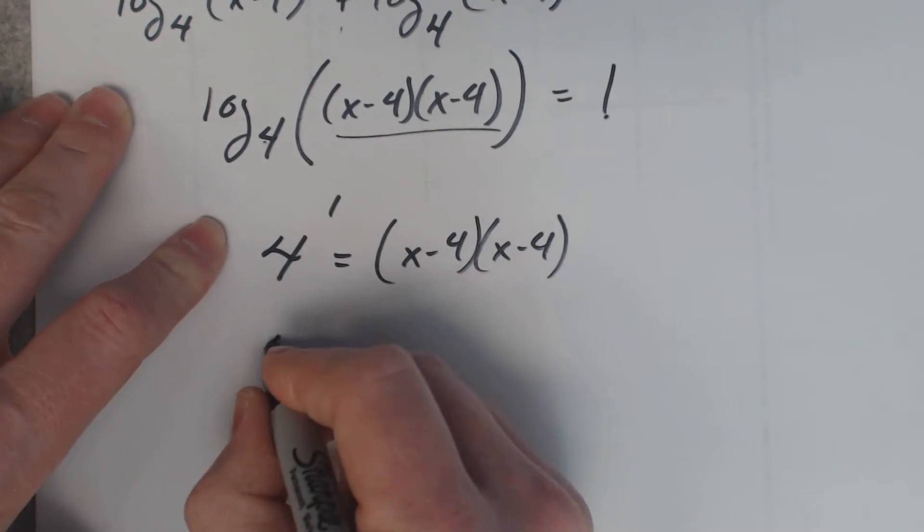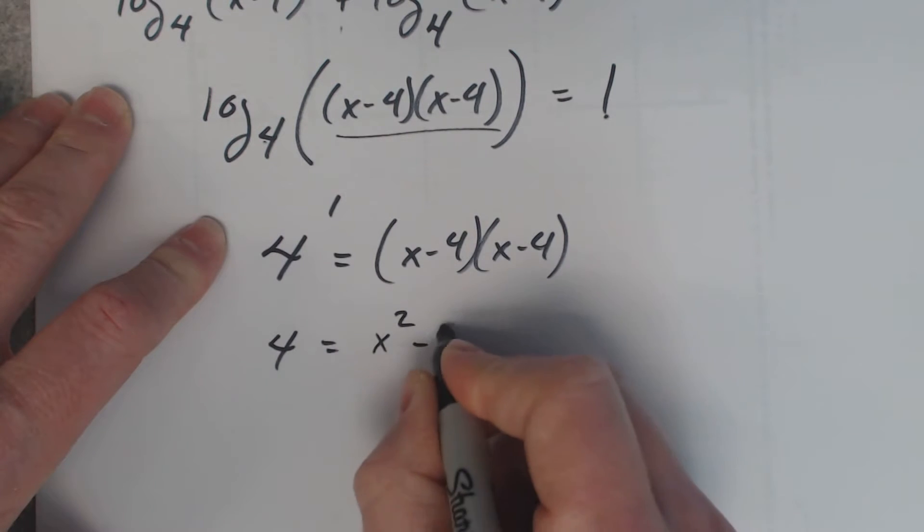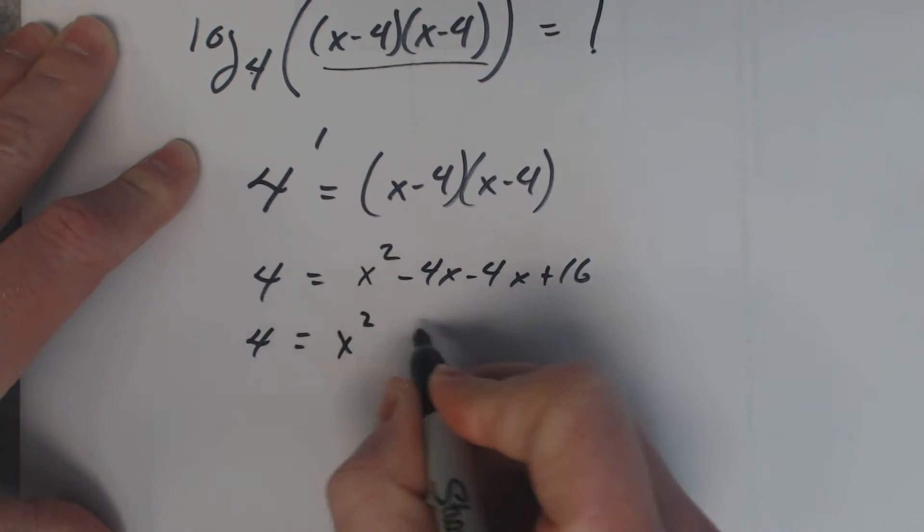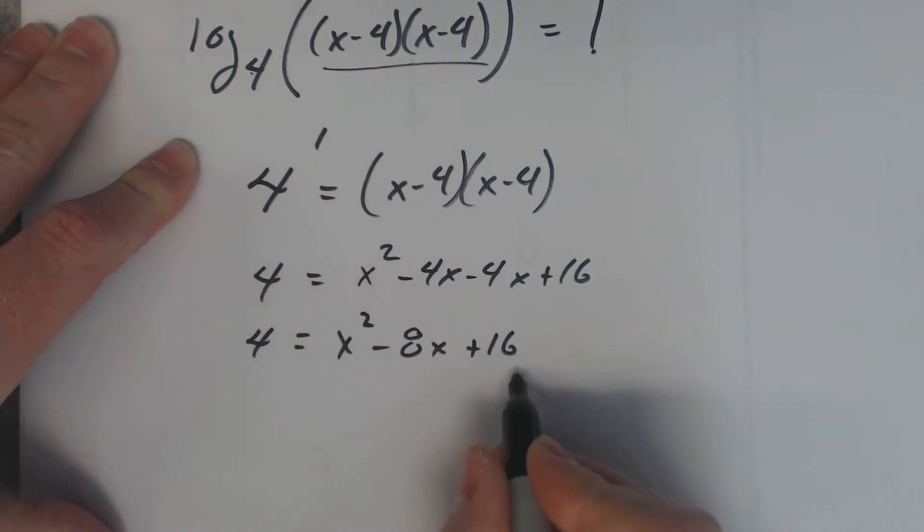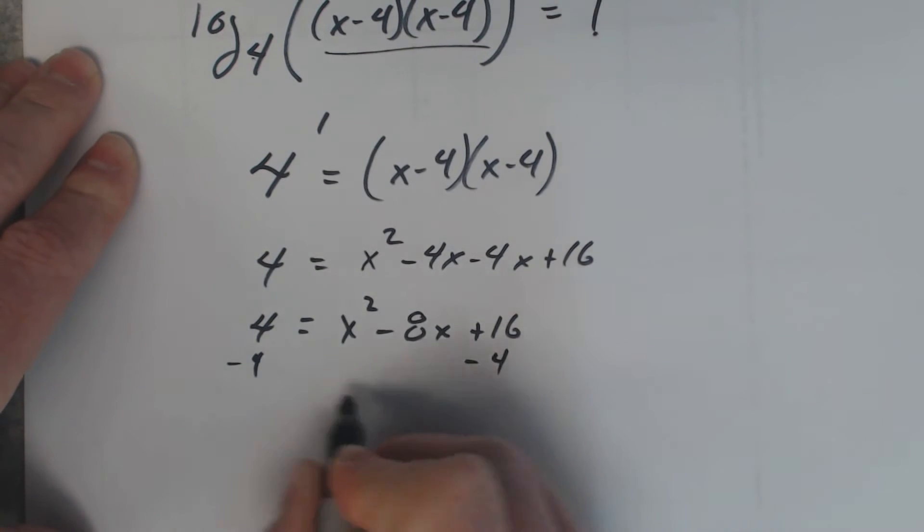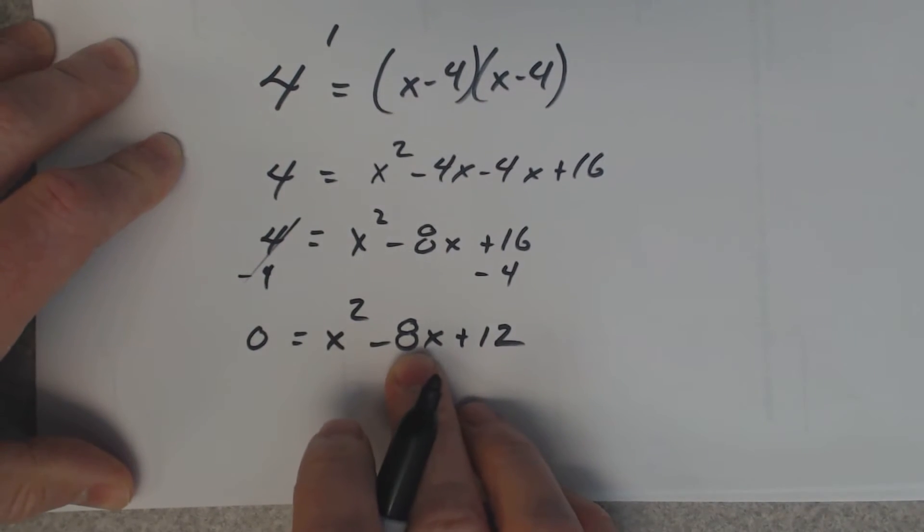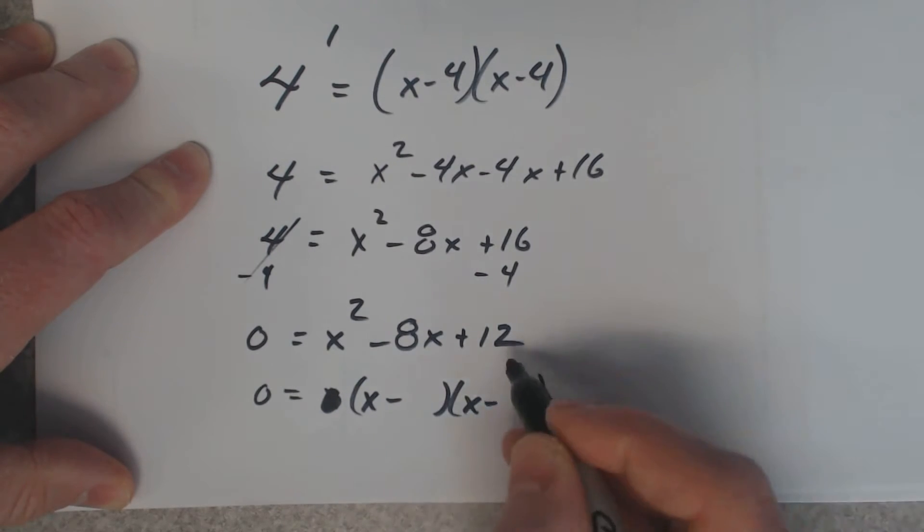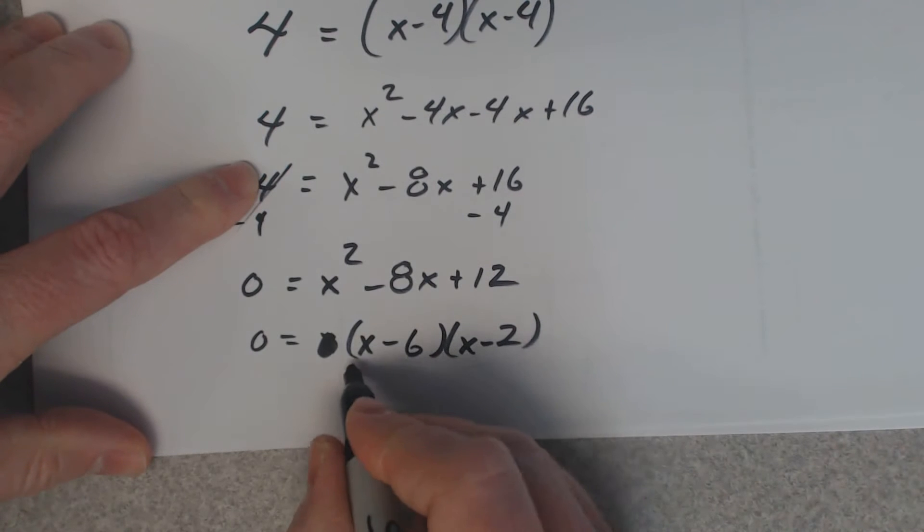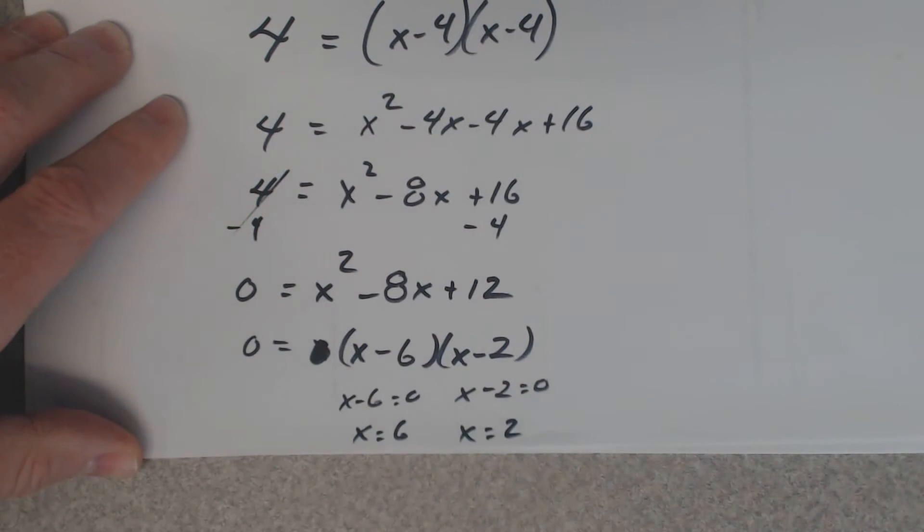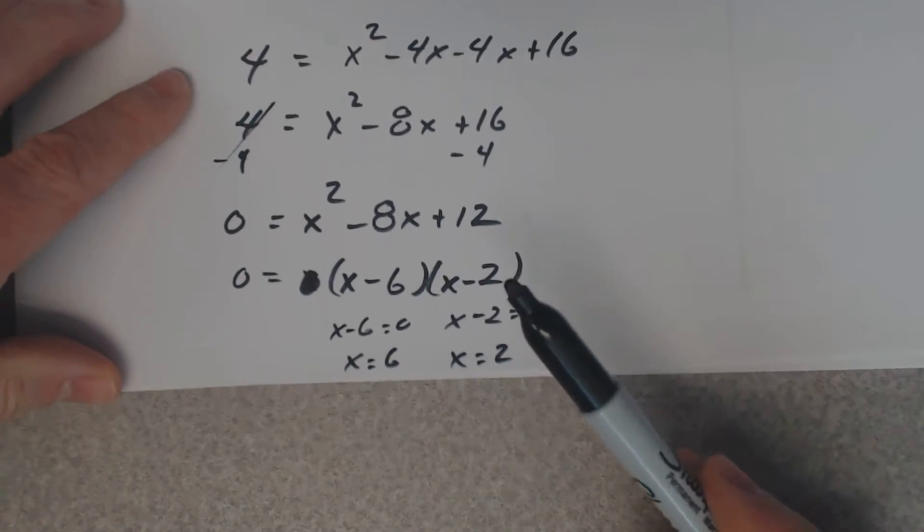Four to the first power is just four. And then if I multiply that out, I get x squared minus four x, negative four x plus sixteen. Now this is a quadratic to solve this. I need to get rid of the four. Make it zero over there. Factors of twelve. That would give me eight. I think that factors. Six and two. And if you set both those factors equal to zero, x equals six. X equals two.